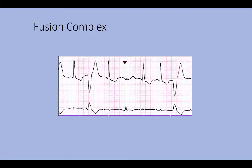Looking at the ECG, you can see a wide and bizarre complex, and then near the triangle arrow, a relatively narrower QRS. What appears to happen with a fusion complex is that the ventricular impulse comes up and the supraventricular impulse comes down simultaneously, producing a complex of intermediate morphology — sort of half ventricular and half supraventricular — and in some cases they almost cancel each other out. This summation is a hallmark of ventricular tachycardia.